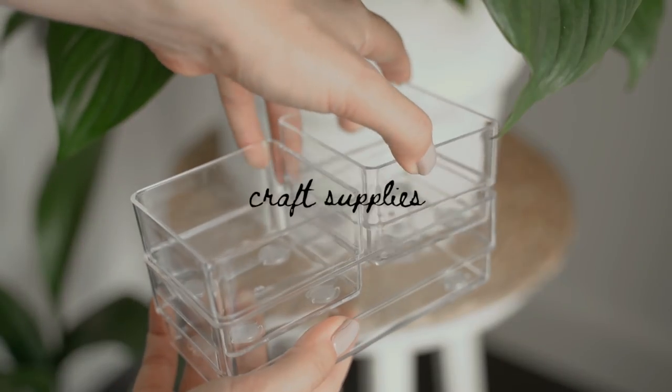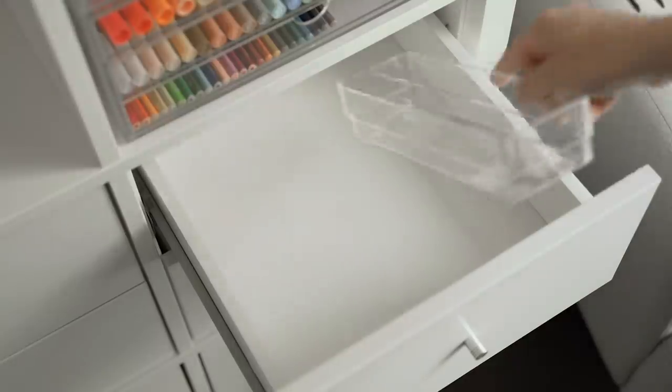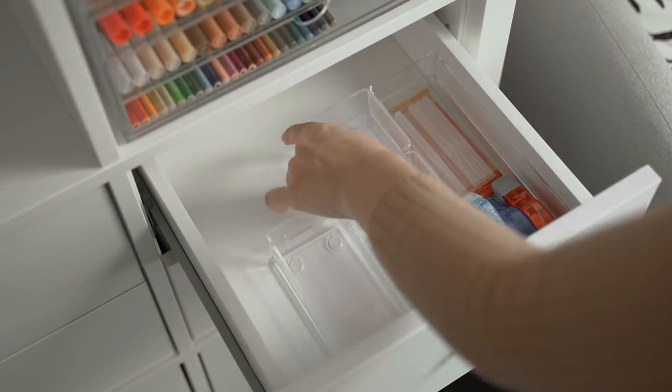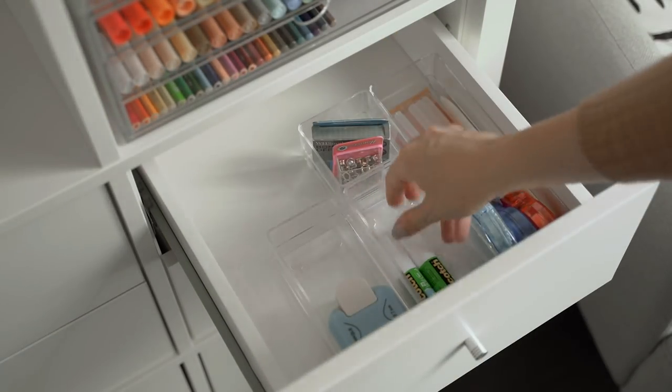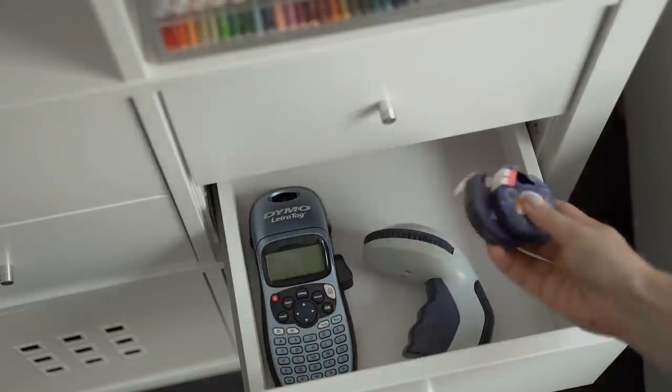I stored all of my craft supplies in the drawers and I used the small acrylic organizers to kind of organize everything by category or size and this also helps to prevent everything from sliding around when you open and close the drawers. And then I just put my label making supplies in the drawer below.